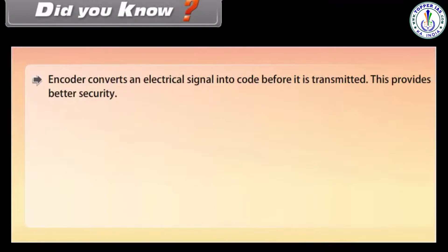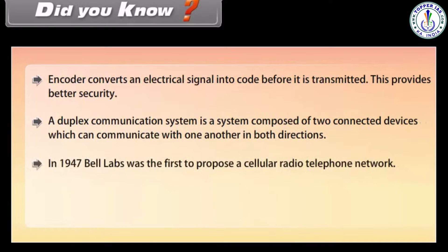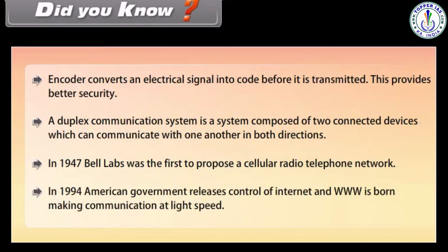Did you know? An encoder converts an electric signal into code before it is transmitted, providing better security. A duplex communication system is composed of two connected devices which can communicate in both directions. In 1947, Bell Labs was the first to propose a cellular radio telephone network. In 1994, the American government released control of the internet and the WWW was born, making communication at light speed.